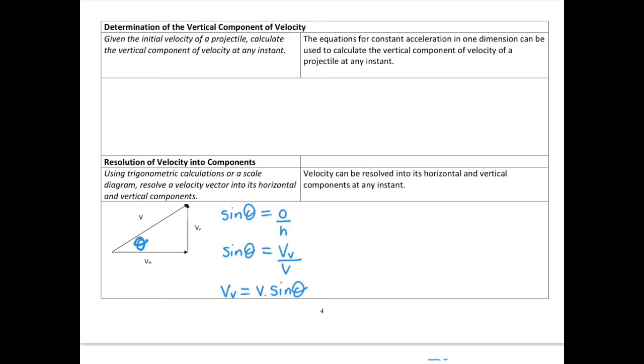We can do a similar thing where the cosine of theta is equal to the adjacent over the hypotenuse. So cosine theta equals v_h over v. If we rearrange that, we get v_h is equal to v times cos theta.